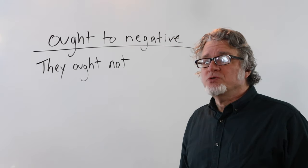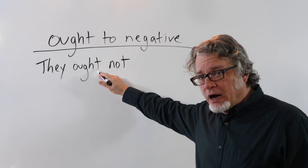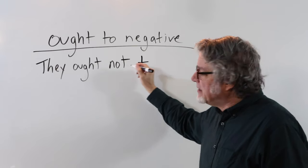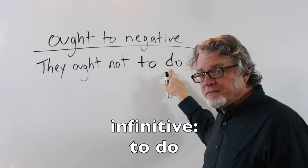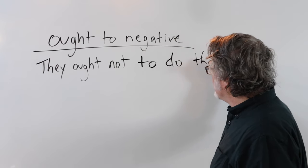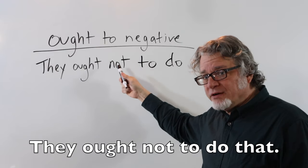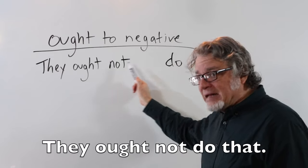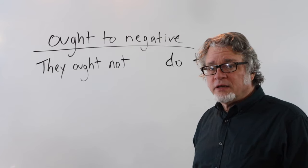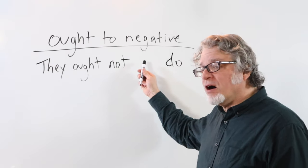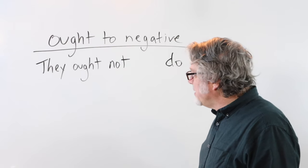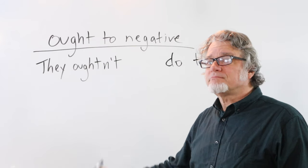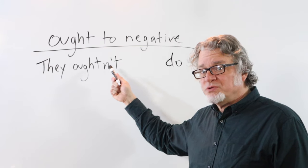To make ought to negative, put 'not' right after 'ought' and then the infinitive. Remember, you can't split an infinitive — it has to stay together. So: 'They ought not to do that.' It is also possible to drop 'to': 'They ought not do that.' That's fine in American English and also acceptable in British English. It is also possible to make a contraction and say 'oughtn't,' though many people don't use this form.